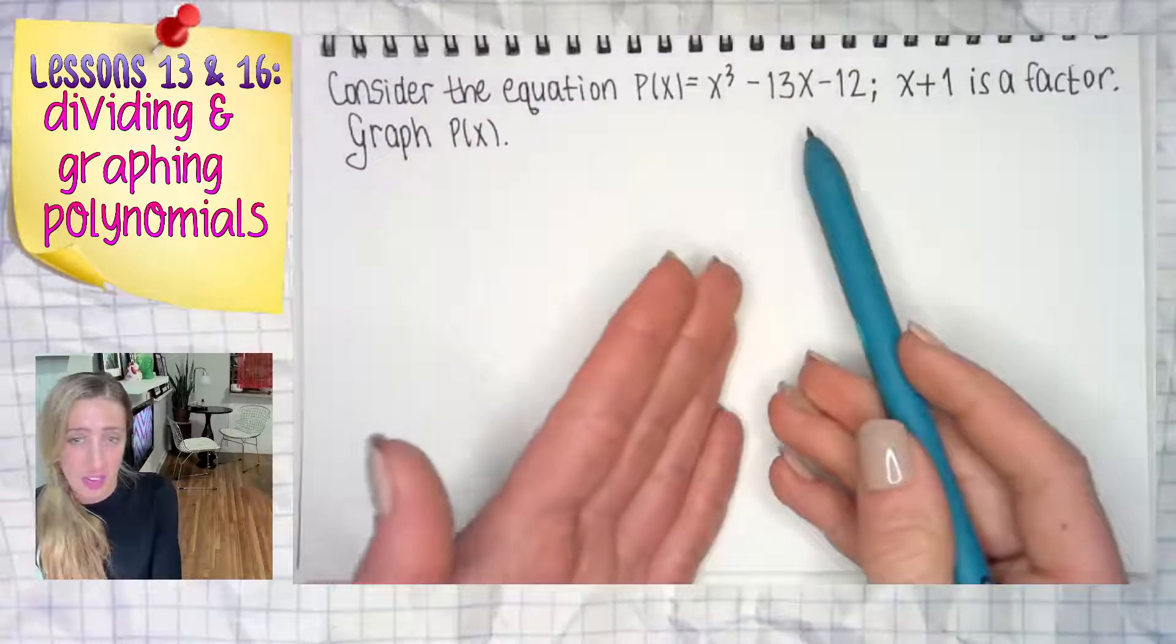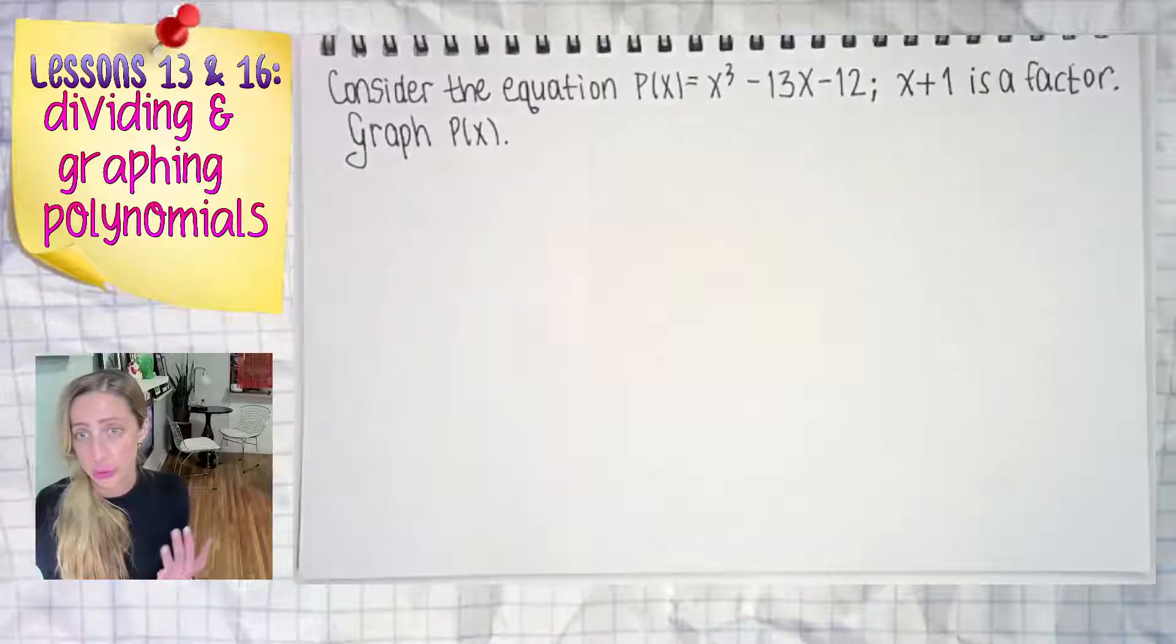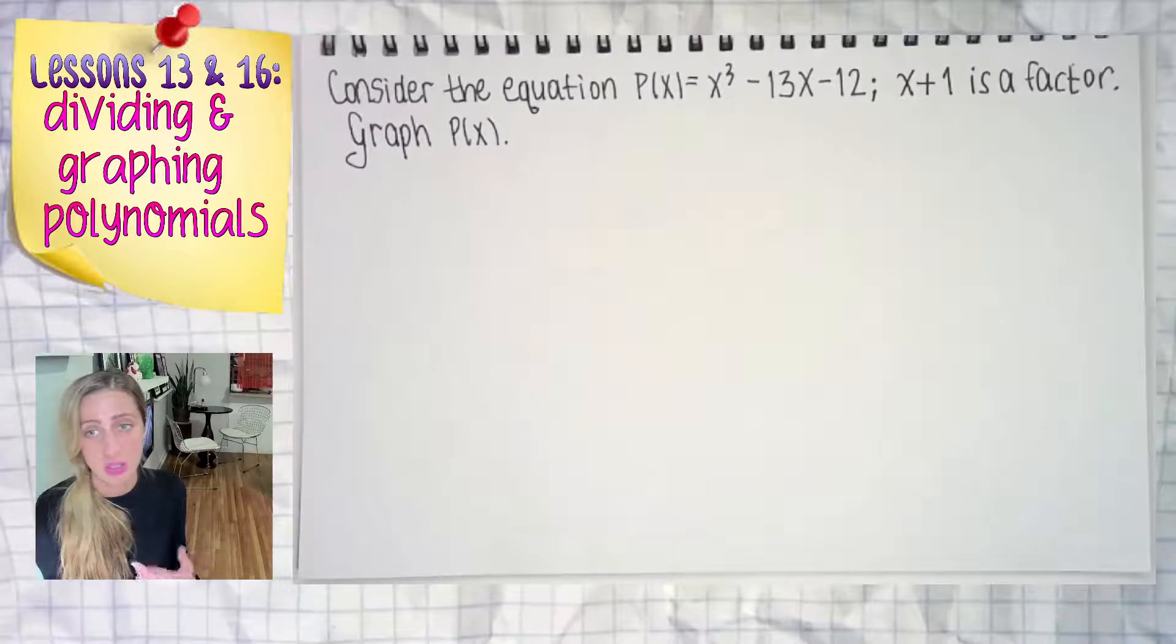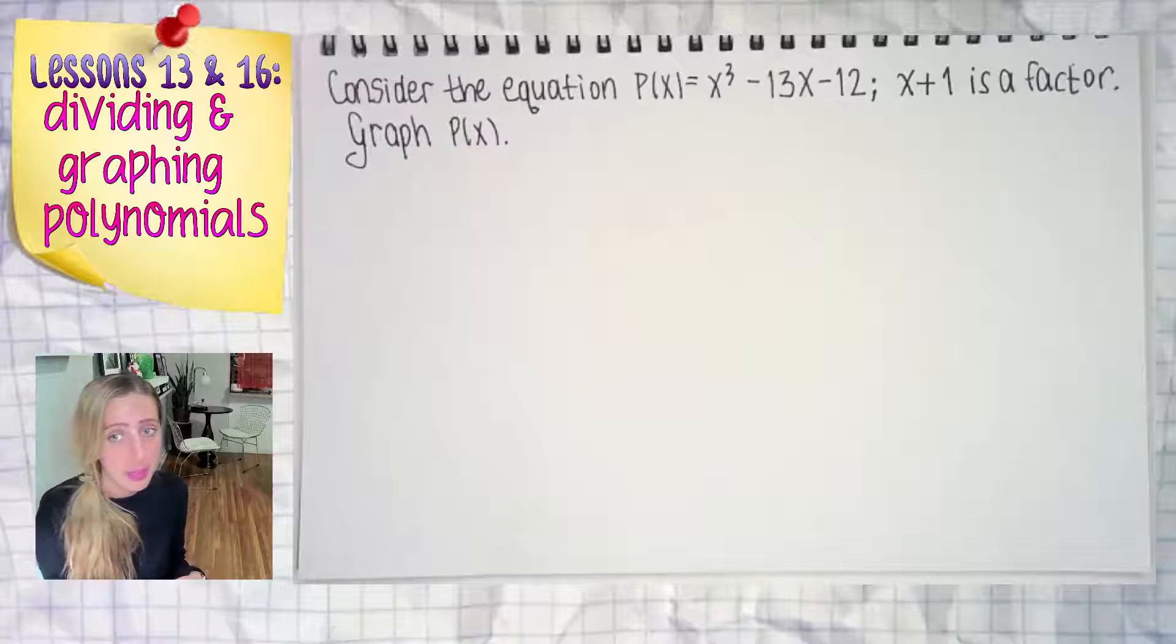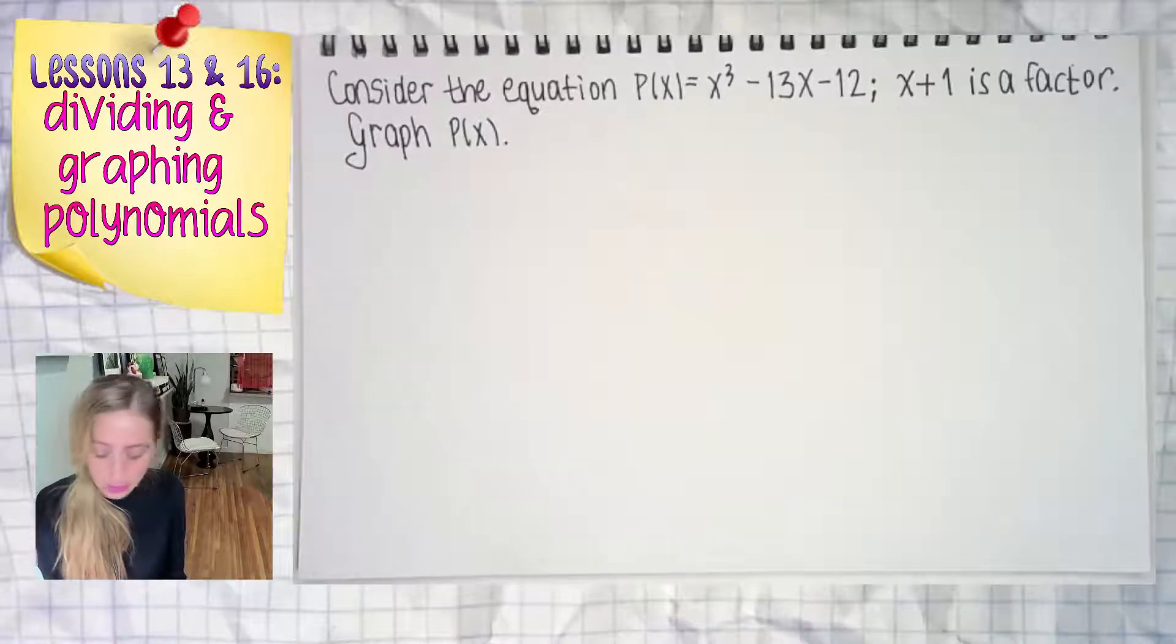Well if I wanted to factor this since I am going to be asked to graph it, I cannot do greatest common factor. I cannot do grouping right now. I cannot do some indifference of cubes, cannot do difference of squares, can't do a c method. Now are there ways to play around with these? Sometimes yes, but right here not seeing anything very obvious.